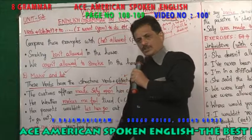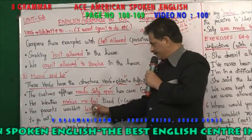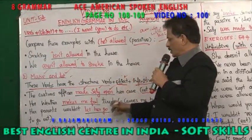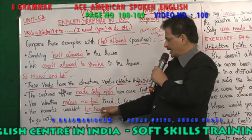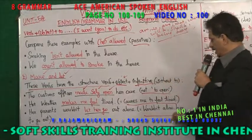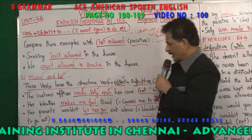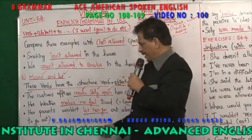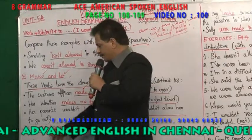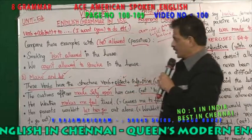'Her parents wouldn't let her go out alone' — let is the verb, her is the object, go is the bare infinitive — not 'to go'. 'Let me carry your bag for you' — after 'let' you get the object, then you use the present tense verb without 'to'.